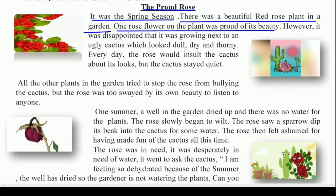Usko bhoat ghamand tha. However, it was disappointed that it was growing next to an ugly cactus which looked dull, dry and thorny. Woh hamesha is baas se dukhi rahta tha ki uske bilkul saath mein ek cactus ka paudha ugha hua tha, jo ki basoorat dikhaai deta tha — bhoat dull, sukha hua, aur kaanton se bhara hua. Usko dukh tha ki woh toh itna sundar hai, lekin saath mein yeh paudha uski sundarta ko kharaab kar deta hai.